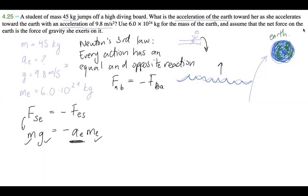You might be thinking: this student weighs almost nothing compared to the earth, so how is the earth exerting a force on her? Well, it's exerting an equal and opposite force, but it's better to look at the formula: force equals mass times acceleration. The earth is absolutely massive — 6 times 10 to the 24 kilograms — so just by guessing, we know the earth's acceleration toward her is going to be a tiny number.